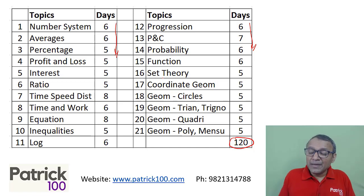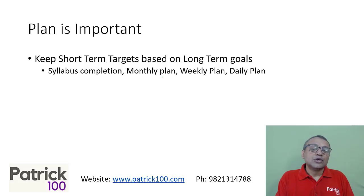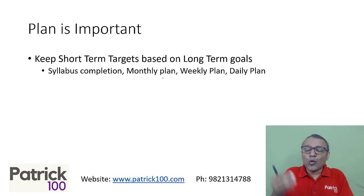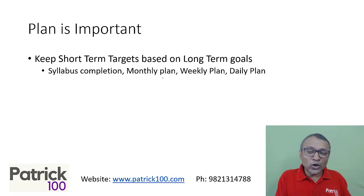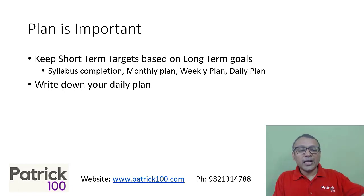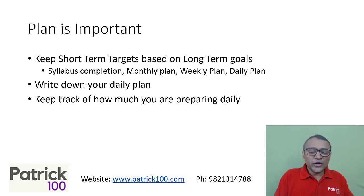Make a monthly plan and a daily plan — that is very important. Your plan should point to your overall syllabus completion. So for this month, decide how many topics you will complete; based on that, figure out how many topics per week; and based on that, plan what you will do today and tomorrow. Plan one day at a time, and modify your plans daily based on how things are going. Write down your daily plan — it's important. Your daily plan should connect to your monthly plan and overall syllabus completion. Keep track of how much you are preparing each day, because that will help you understand your capacity, monitor your progress, and modify your plans accordingly.